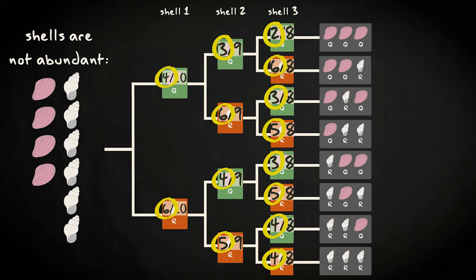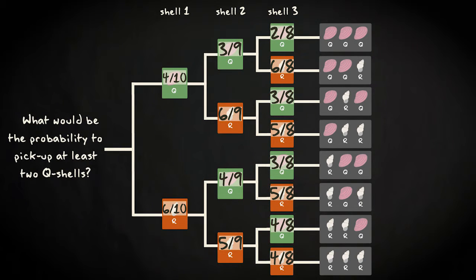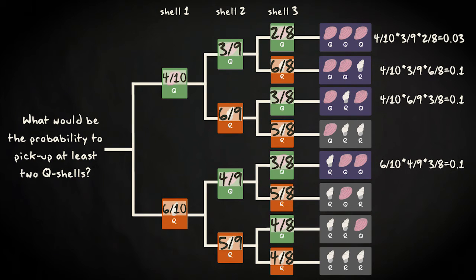Can you, for this new situation with only a handful of shells, also calculate the probability to pick up at least two Q shells? While the probabilities in the tree diagram have changed, its structure is still the same. The event of picking up at least two Q shells still contains the sequences QQR, QRQ, RQQ and QQQ as outcomes. The probability for each of these is given here, and the total probability to get any of these outcomes is one third.